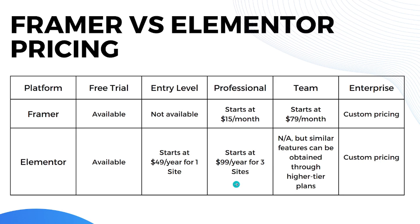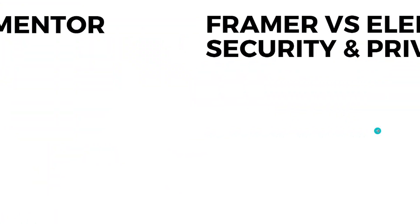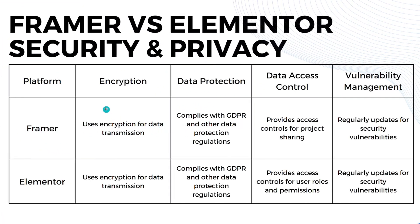When it comes to the team subscription, Framer starts at $79 per month while Elementor doesn't have a direct equivalent, though similar features can be obtained through higher tier plans. When it comes to enterprise, both Framer and Elementor have customizable enterprise plans with customizable pricing.